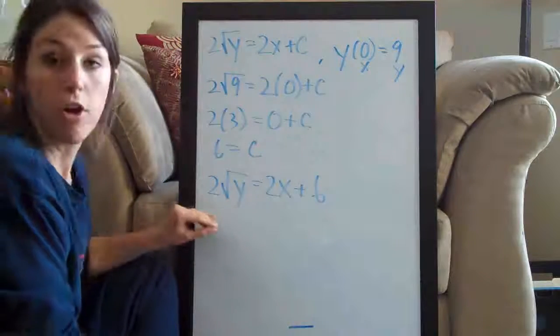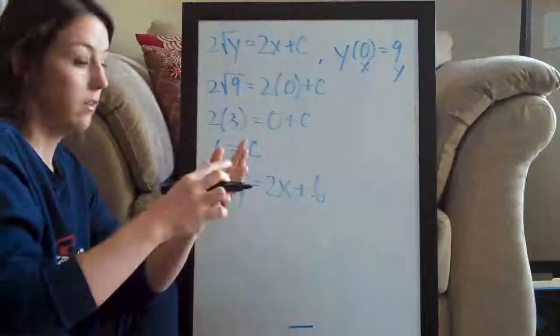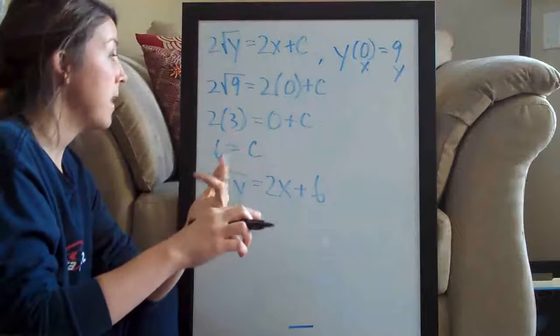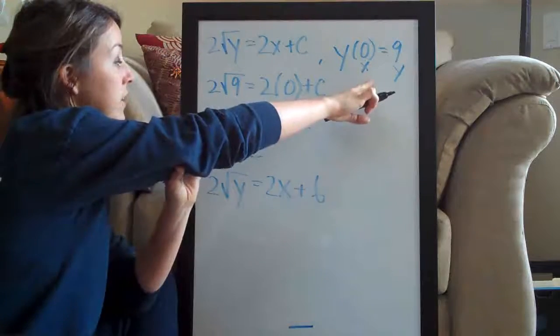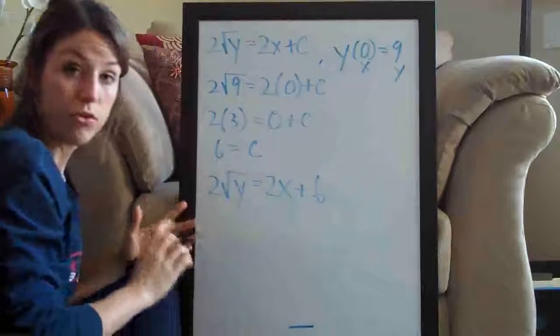And now all we need to do is solve for y. So remember: separate the variables, integrate, plug in the values from the initial condition to solve for C, and then solve for y. Those are the four steps.